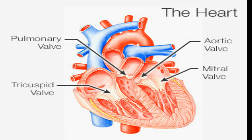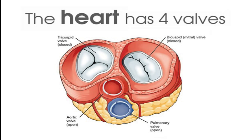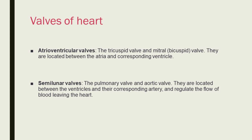The walls of the heart are structured to ensure blood flows in only one direction. They are composed of connective tissue and endocardium. There are four valves of the heart, divided into two categories: the atrioventricular valves — the tricuspid valve and the mitral (bicuspid) valve — located between the atria and corresponding ventricles; and the semilunar valves — the pulmonary valve and the aortic valve — located between the ventricles and their corresponding arteries, regulating the flow of blood leaving the heart.